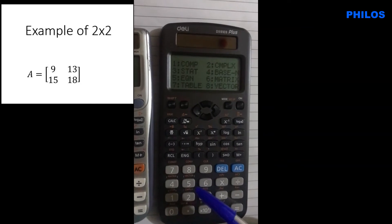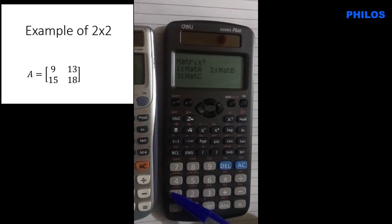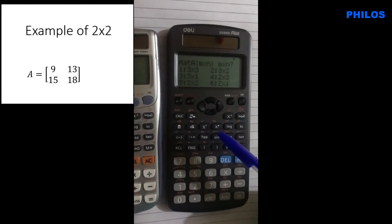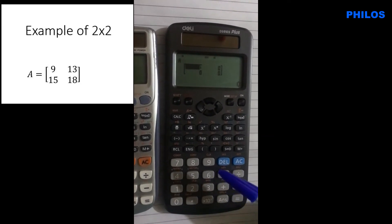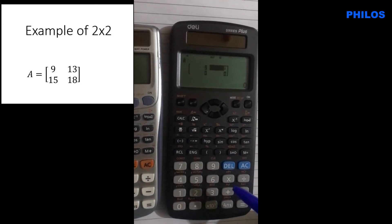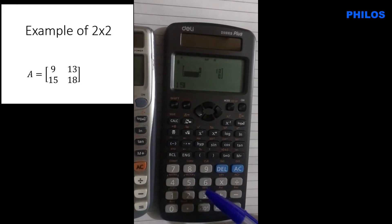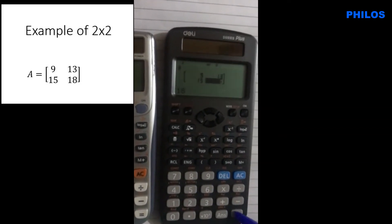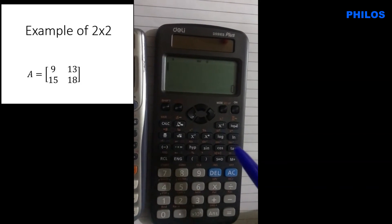To set this up, click Mode then option 6 for Matrix, then option 1 to select Mat A. For a 2x2 matrix, choose option 5. Now fix the elements: row 1 column 1 is 9, row 1 column 2 is 13, row 2 column 1 is 15, row 2 column 2 is 18. Press equals after each, then press AC — your data is still within the calculator.